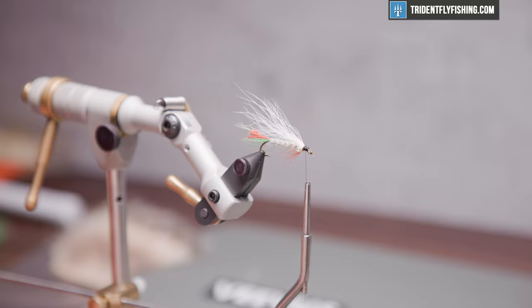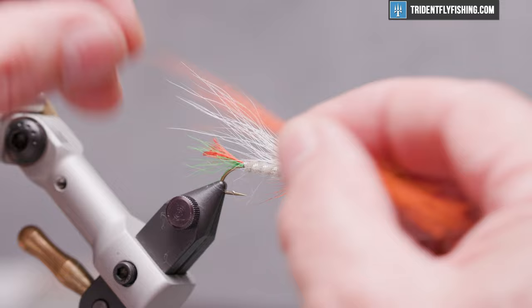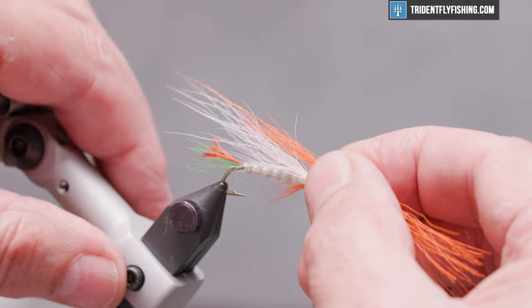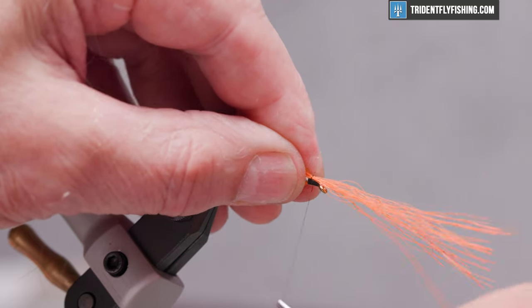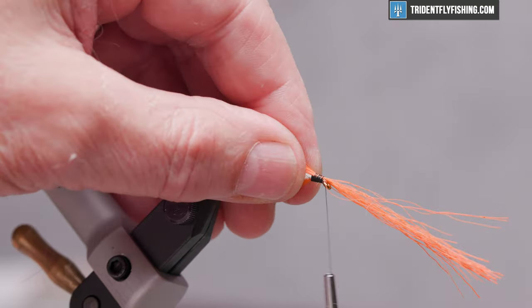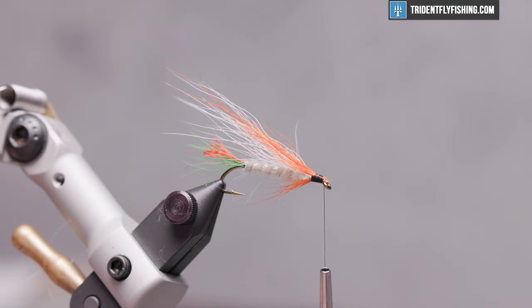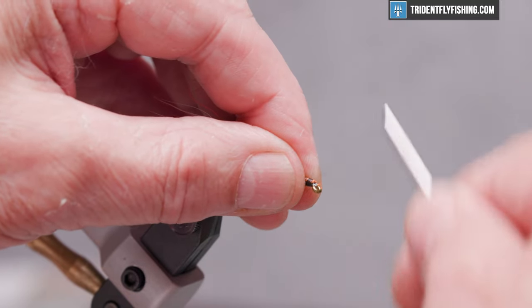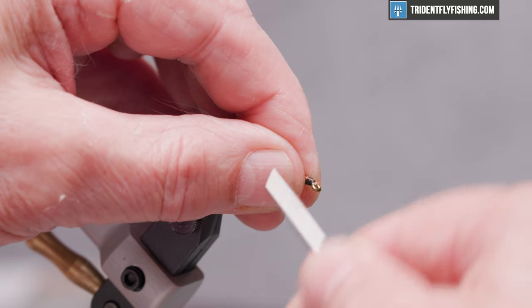Next color is orange, so maybe 15 hairs or so. So once you're satisfied with the length, lay that in right on top of the white. Make turns up to the eye, cut off your excess material. Make turns at the base of the eye and wrap back. That's going to keep the head smooth.